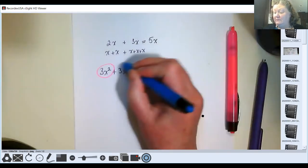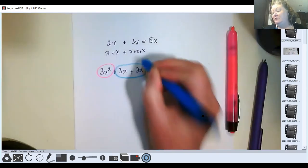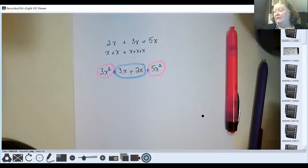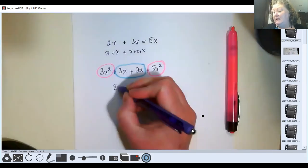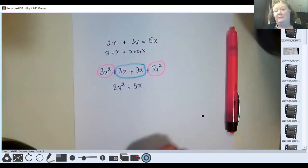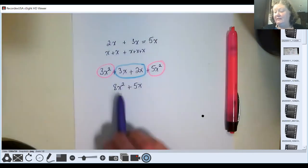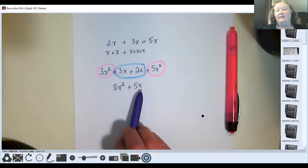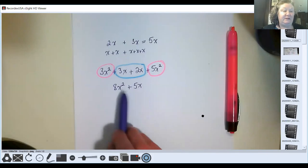These two are like terms because they both have an X. So I would rewrite this as 8X squared plus 5X, and I can't combine them any further than that because this is a different variable than this. Even though they both have an X, this one doesn't have a square and this one does.